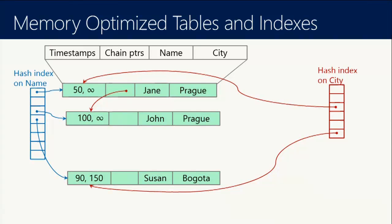This is an example of a table with two hash indexes. We have a number of rows which just exist in memory. The timestamp and the pointers form the header, and then we have the payload. In this example we have two columns in the payload, and two hash indexes — one on name, one on city. The hash index consists of a number of buckets, and each hash bucket is just an 8-byte memory pointer to the first row in that bucket.